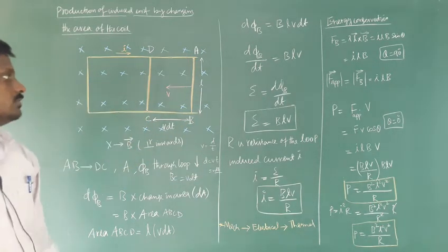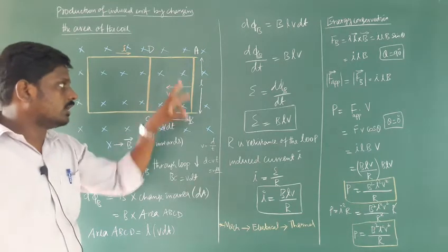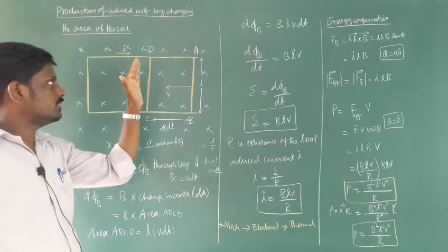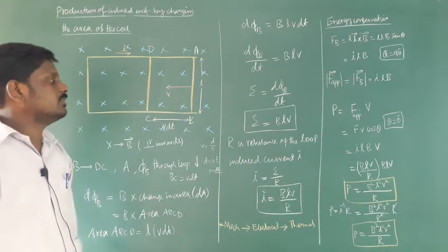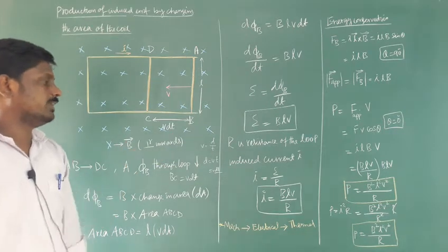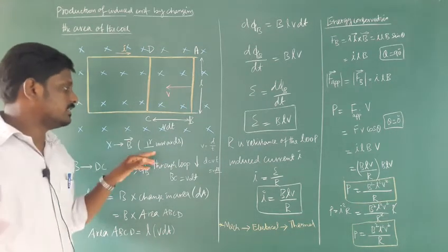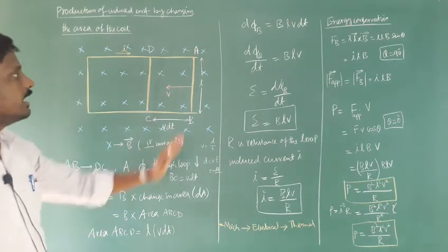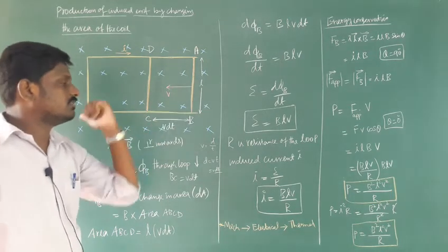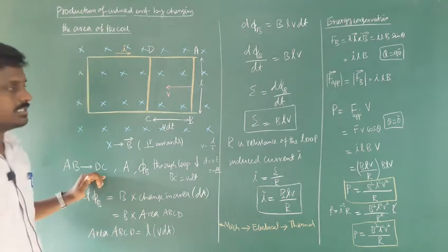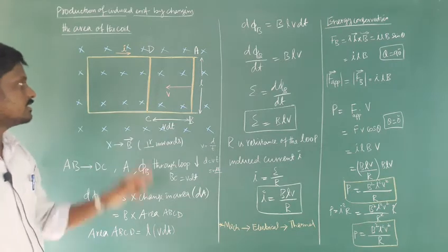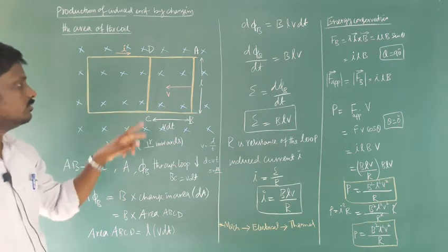Consider a metallic frame where AB is a movable rod of length L. AB is moved towards CD. The metallic frame is placed in a uniform magnetic field perpendicular to the plane. AB is moved towards CD, that is towards left, with constant velocity V. As AB moves, the area of the metallic frame decreases, and the magnetic flux through the loop also decreases.